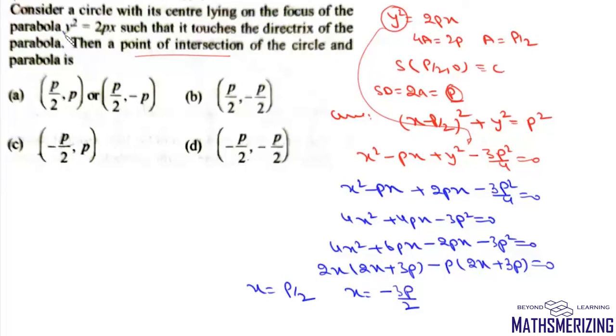Since this parabola lies in the first and fourth quadrant, the value of x cannot be negative, so we'll discard x = -3p/2.